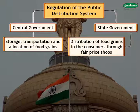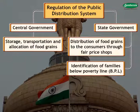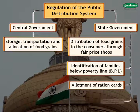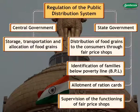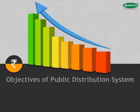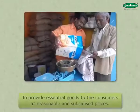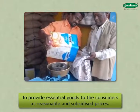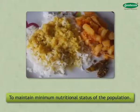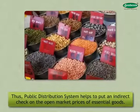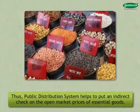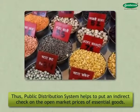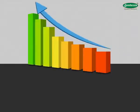State governments are also responsible for operational activities like identification of families below poverty line or BPL, allotment of ration cards, supervision of the functioning of fair price shops, etc. There are two main objectives of the public distribution system: to provide essential goods to consumers at reasonable and subsidized prices, and to maintain minimum nutritional status of the population. Thus, the public distribution system helps to put an indirect check on the open market prices of essential goods.